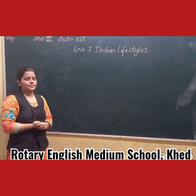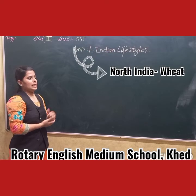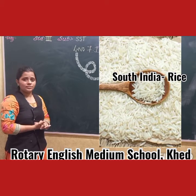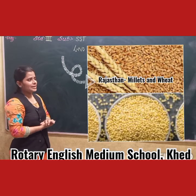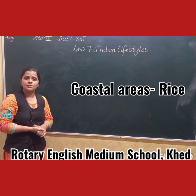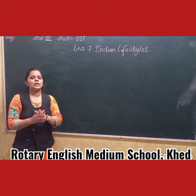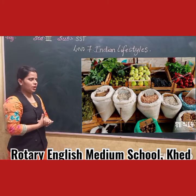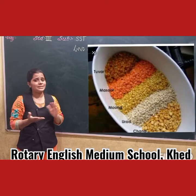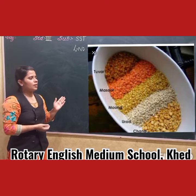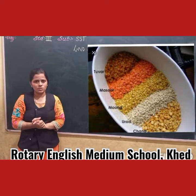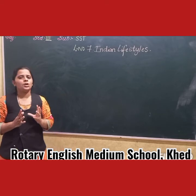In North India, people mostly have wheat. In East India, rice. In South India, rice. In Rajasthan, millets and wheat. In middle areas, maize. And in coastal areas, rice. According to the region, people have different food. The people of India also eat pulses, vegetables, and wheat. Pulses like arhar, moong, matki, masur, and chana are eaten all over the country.